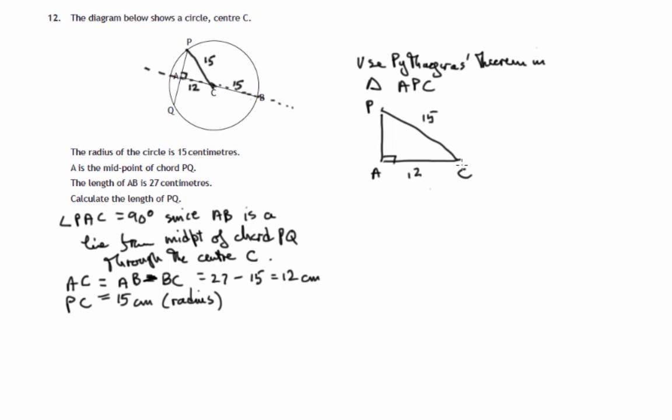So Pythagoras, smaller side AP squared would be a difference. Largest side is PC squared minus AC squared. So it's a difference because we're finding one of the smaller sides. PC squared is 15 squared, AC squared is 12 squared. 15 squared is 225, 12 squared is 144. We get 81. And therefore square rooting both sides, AP is equal to positive square root of 81, which is 9 centimetres.